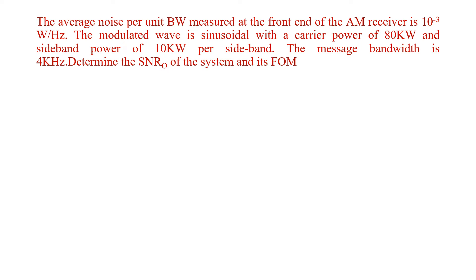The question: the average noise per unit bandwidth measured at the front end of an AM receiver is 10 raised to minus 3 watts per hertz. The modulated wave is sinusoidal with a carrier power of 80 kilowatt and sideband power of 10 kilowatt per sideband. The message bandwidth is 4 kilohertz. Determine the output signal to noise ratio of the system and its figure of merit.